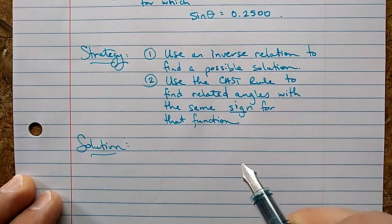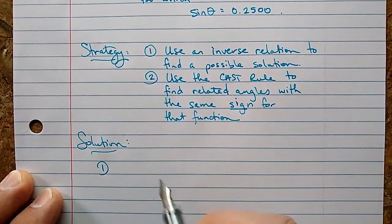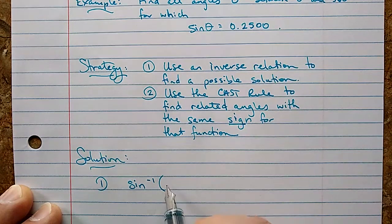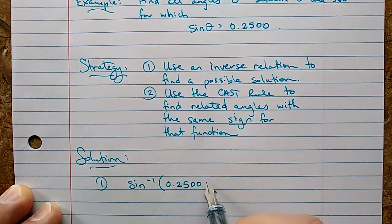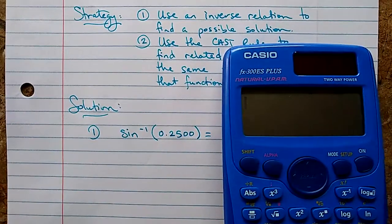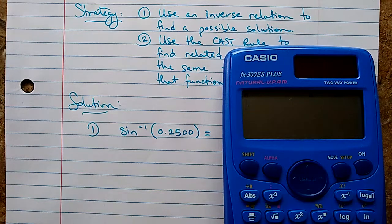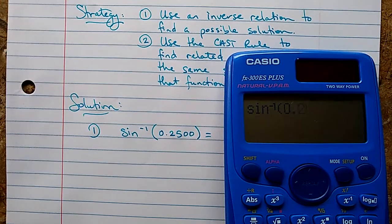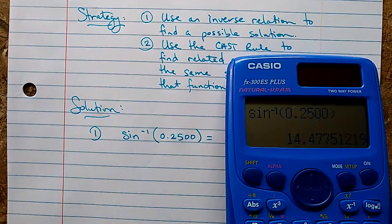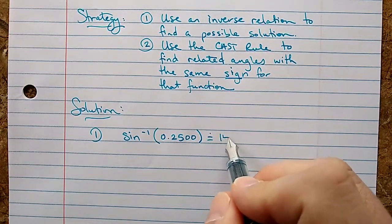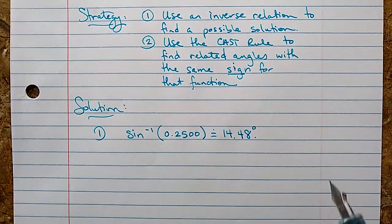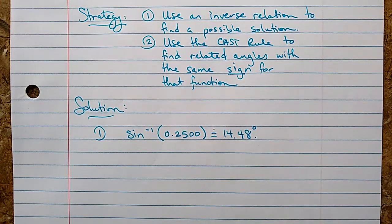So let's start writing our solution. Step one: let's use an inverse relation to find a possible solution. Sine inverse of 0.2500. That's what the sine function gives, so the inverse function will give us back an angle. On this calculator, shift sine, you can see the little inverse up there. I type in 0.2500 and I get 14.48 degrees.